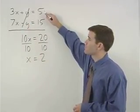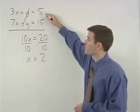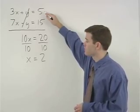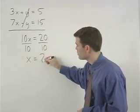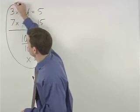So let's go with our first equation, 3x plus y equals 5. If we plug a 2 back in for x, that gives us 3 times 2 plus y equals 5.